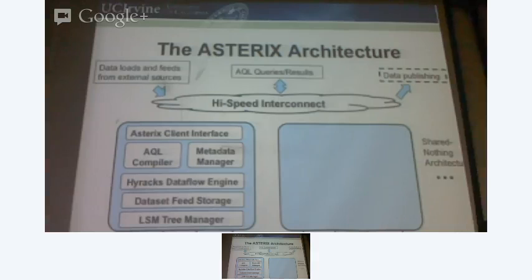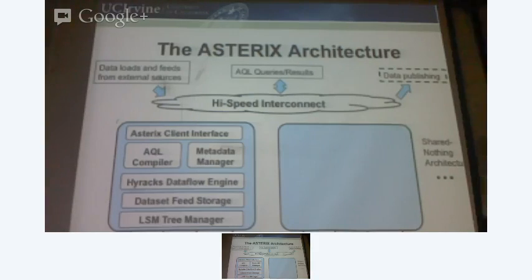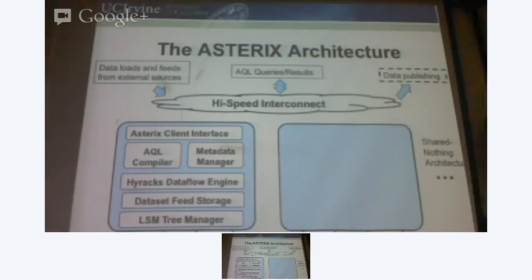When you write a query, the first thing that happens is you represent it as a parse tree. You write some language and there's a parse tree. Let's say there is a relation rA and rB, and you want to join them. There is data that is going to flow from here and here and the result is put forward in the apply of selection. Let's say it's a simple select-project-join between two relations.